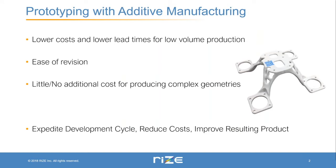So first, why is additive manufacturing valuable in the prototyping process? Some of the main values include its ability to lower costs and lower lead times for low volume production compared to other methods of manufacturing. For example, traditional subtractive manufacturing often involves more waste material and longer lead times due to the labor involved in programming or performing the process, whereas with additive manufacturing you can simply create the file and send it right to a machine, which can prepare the prototyped product by itself.